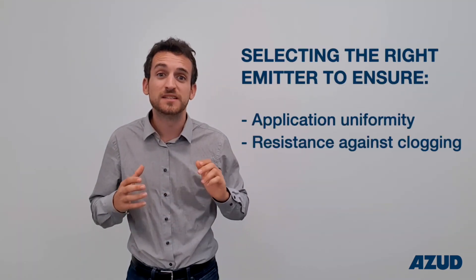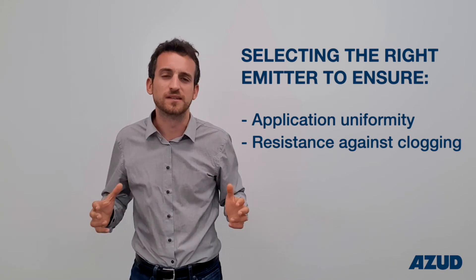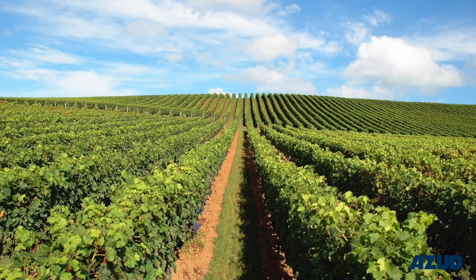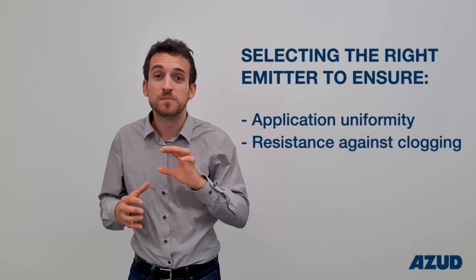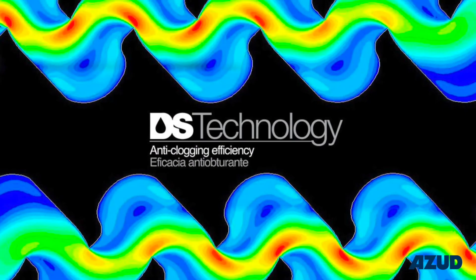Here, choosing the right emitter type becomes very important. The characteristics of the selected emitter will largely influence the application uniformity. Note that not all emitters have the same characteristics and don't offer the same properties against clogging.